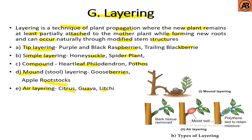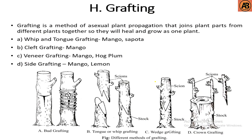Here in the figure we can see different types of layering — this is called mound layering and this is the air layering process. This is the process of air layering or asexual propagation by layering.